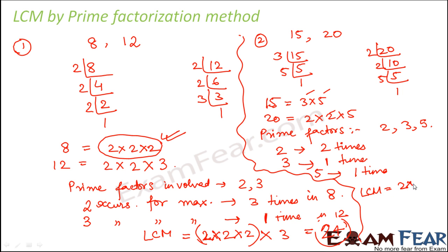Therefore what would be the LCM? LCM would be 2 into 2 because 2 occurs 2 times into 3 because 3 occurs 1 time into 5 because 5 also occurs 1 time. So 2, 2 is 4 into 3, 12 into 5, 60. Therefore LCM of 15 and 20 is equal to 60.